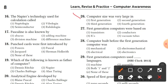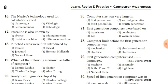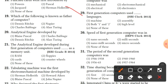Question 26: computer size was very large in the first generation. Option 1 is the right answer. Question 27: first generation computers were based on vacuum tubes. Option 4 is the right answer. Question 28: computers built before first generation were electro-mechanical computers. Option 2 is the right answer.